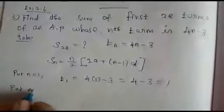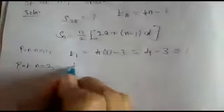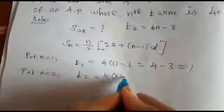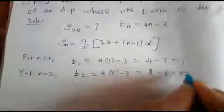Next, put n equals 2. T2 equals 4 into 2 minus 3. 4 twos are 8 minus 3. 8 minus 3 is 5.